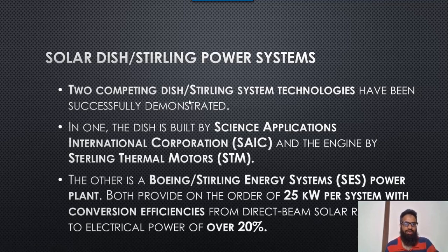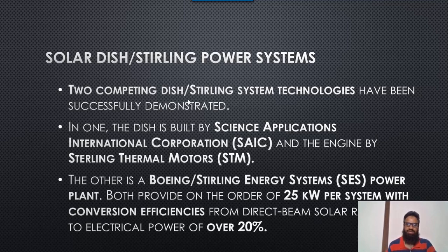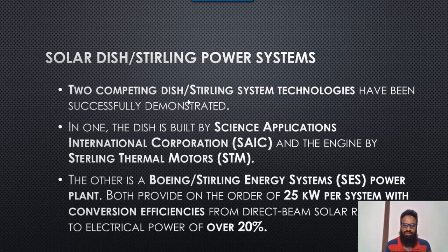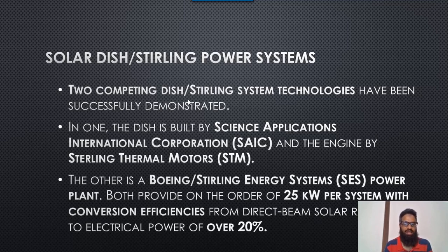Two competing dish-Stirling system technologies have been successfully demonstrated. One dish is built by Science Application International Corporation (SAIC) with the engine by Stirling Thermal Motors. The other is the Boeing-Stirling Energy Systems (SES) power plant. Both provide on the order of 25 kilowatt per system, with conversion efficiency from direct beam solar radiation to electrical power of approximately 20 percent.